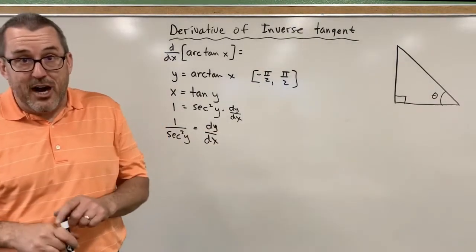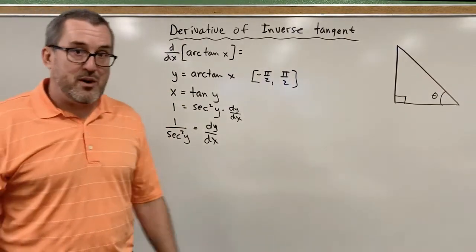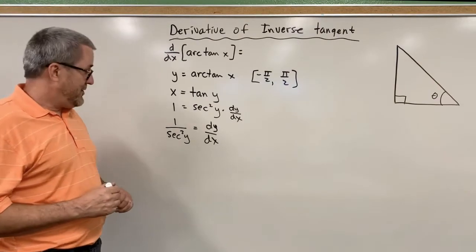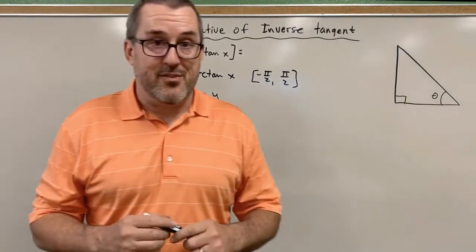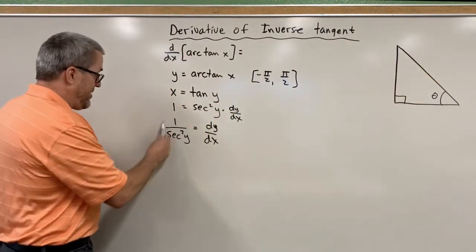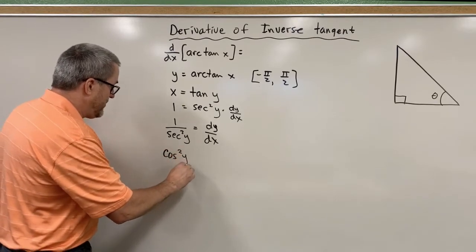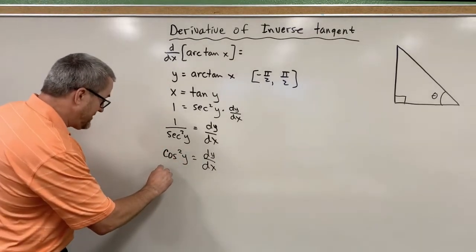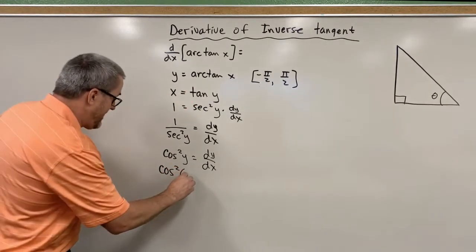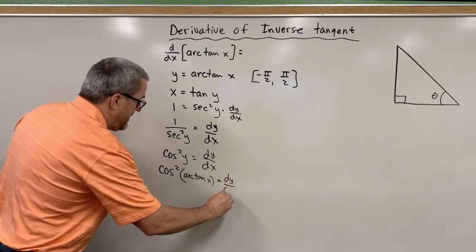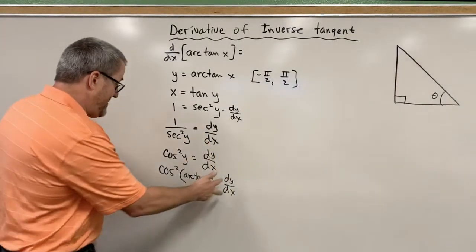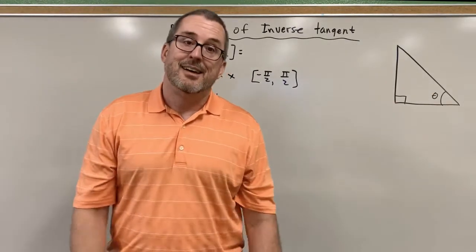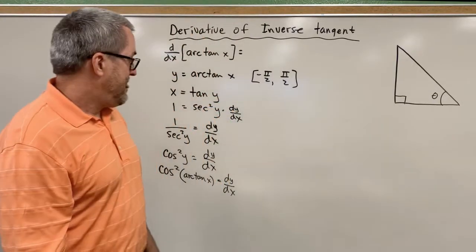We could stop here and say the derivative of arc tangent of x is 1 over secant squared of y, but that's awkward because we're leaving our derivative in terms of y. So let's do more work and write it in terms of x. Since the reciprocal of secant is cosine, 1 over secant squared can be written as cosine squared of y. And since y is the arc tangent of x, this becomes cosine squared of the arc tangent of x. But let's see if we can simplify this into something neater.